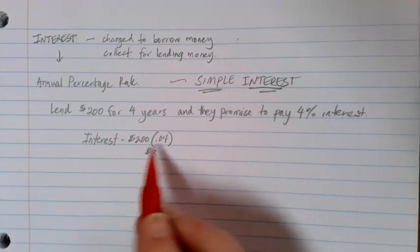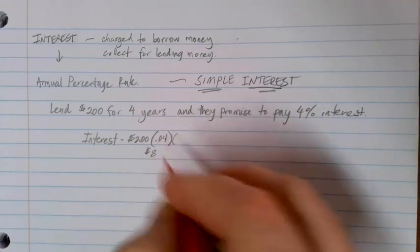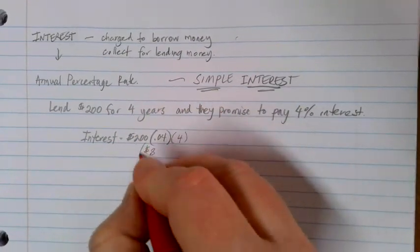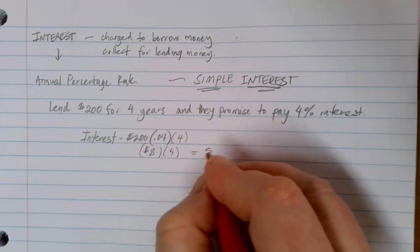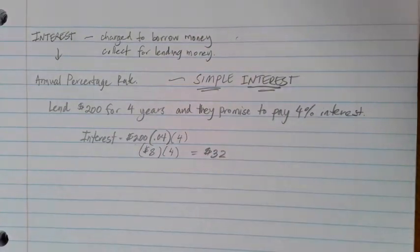So after one year, my $200 would have gotten $8. If this loan goes on for four years, then we're going to be paying about $8 every year for four years, and the interest on that loan would be $32.